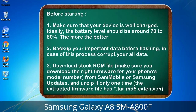Before starting: 1. Make sure that your device is well charged. Ideally, the battery level should be around 70 to 80% — the more the better. 2. Back up your important data before flashing, in case this process corrupts your data. 3. Download the stock ROM file and make sure you download the right firmware for your phone's model number.